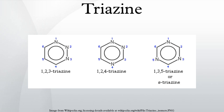Cyanuric chloride assists in the amidation of carboxylic acids. The 1,2,4-triazines can react with electron-rich dienophiles in an inverse electron-demand Diels-Alder reaction. This forms a bicyclic intermediate which normally extrudes a molecule of nitrogen gas to form an aromatic ring again. In this way the 1,2,4-triazines can be reacted with alkynes to form pyridine rings. An alternative to using an alkyne is to use norbornadiene, which can be thought of as a masked alkyne.